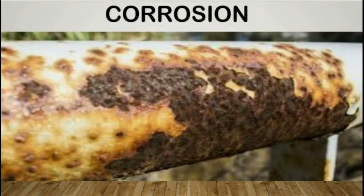Corrosion: when an iron article rusts, a reddish-brown layer forms on it. A greenish layer is seen to form on a copper article. This process is called corrosion of metals. Things become weak due to corrosion. Corrosion is caused by oxygen, moisture, vapor, or chemicals in the air.